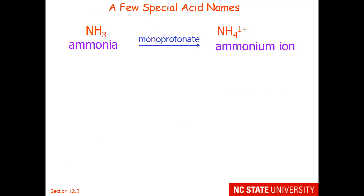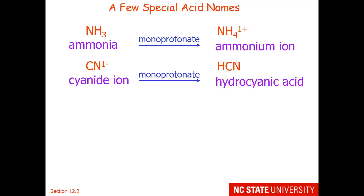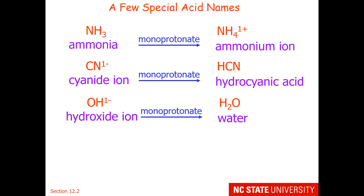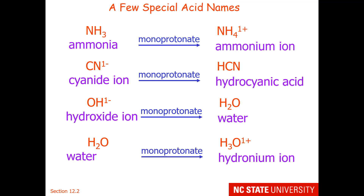There are a few special acid names. Ammonia, when we protonate it, becomes the ammonium ion. Cyanide ion obeys the convention and becomes hydrocyanic acid — hydrocyanic acid when soluble in water, and hydrogen cyanide when in the gas form. And of course you're familiar with the hydroxide ion and water, and water and the hydronium ion.